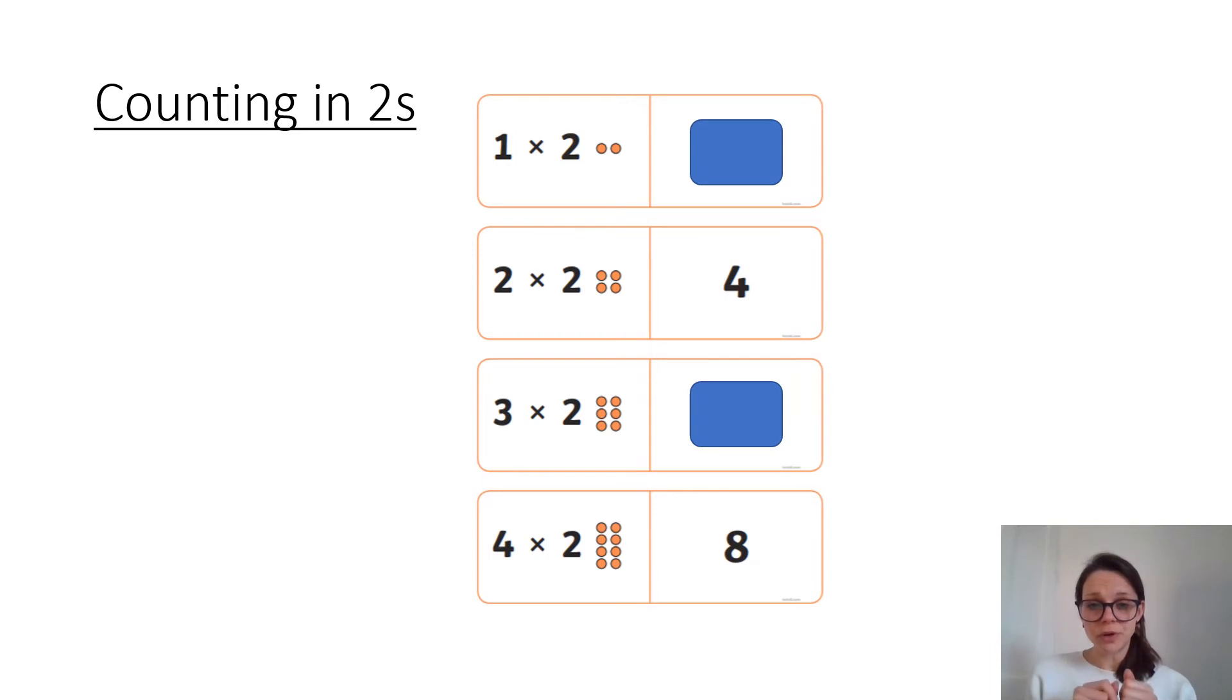Two groups of two is four. What's three groups of two then? And then we've got the answer there for four groups of two is eight. So pause the video and have a go at just filling in those gaps. Which numbers are missing?